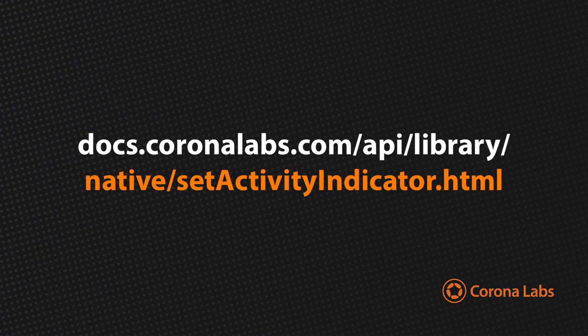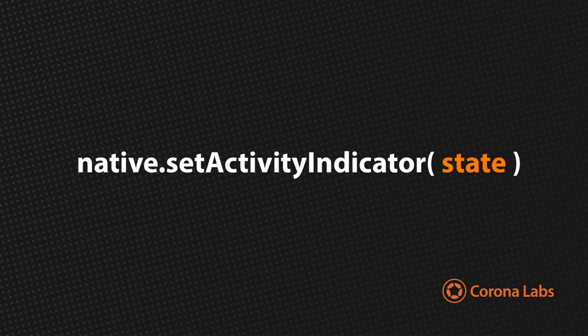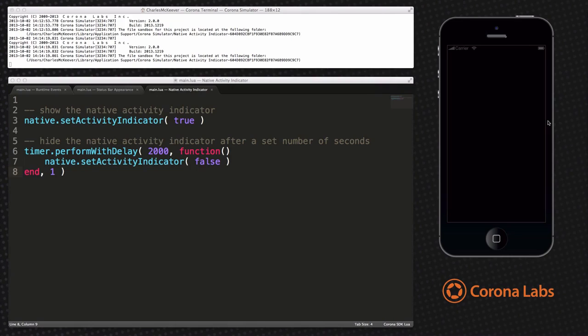See the activity indicator documentation located on the Corona Labs website for more details. native.setActivityIndicator accepts one required Boolean parameter to set its state of true or false. Let's look at some example code.